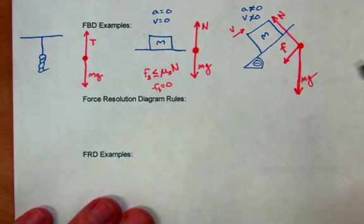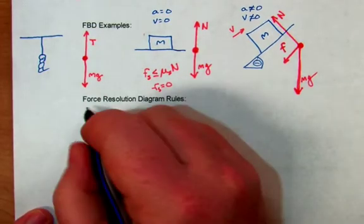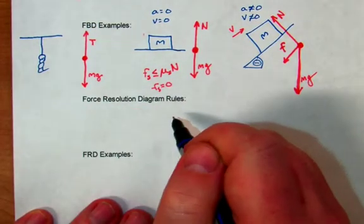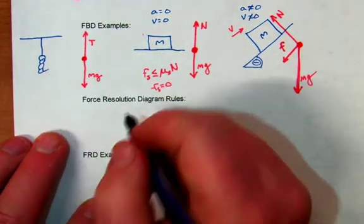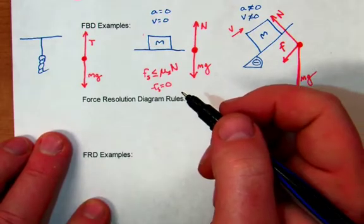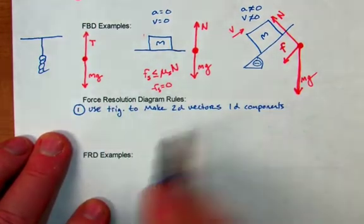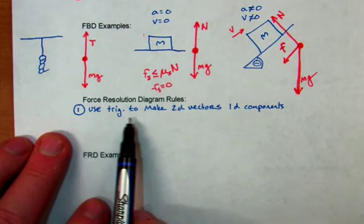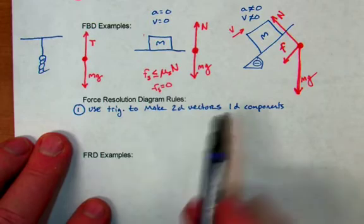So a force resolution diagram is quite simply when you break vectors into their components. So if I was going to give you rules for that, you would follow the rules of adding and subtracting any vectors to get a two dimensional vector. So what you would do is you would use trigonometry to make your 2D vectors into their 1D components.